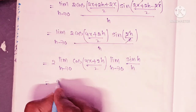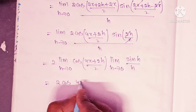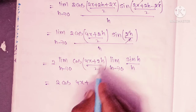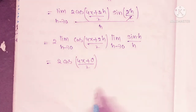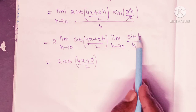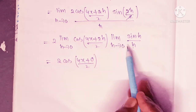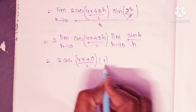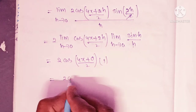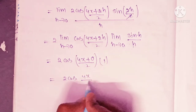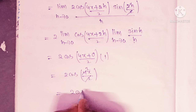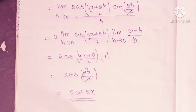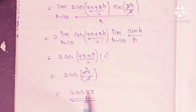Using the standard limit formula: limit h tends to 0 of sin(x) by x equals 1, so limit h tends to 0 of sin(h) by h equals 1. Substituting h equals 0 in the cosine term: cos((4x plus 0) by 2) equals cos(2x). Therefore the answer is 2 cos(2x). So the derivative of sin(2x) is 2 cos(2x).